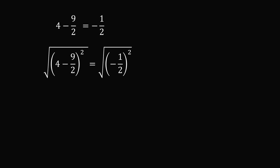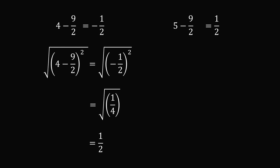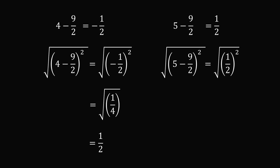The square of minus 1 half equals 1 over 4. The square root of 1 over 4 is only equal to positive 1 over 2. Now if you do the same thing with 5 minus 9 over 2, you get 1 half. Taking the square root of the square of 1 half gives the square root of 1 over 4, which equals 1 over 2. So in some cases the square root of the square of something gives the opposite of what we started with, and in other cases it equals the original.